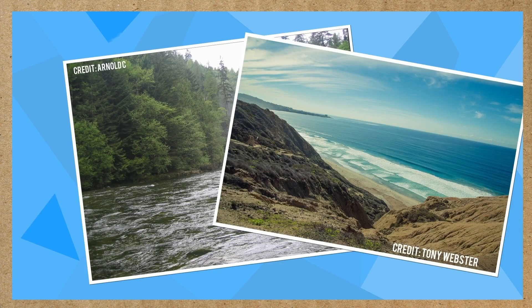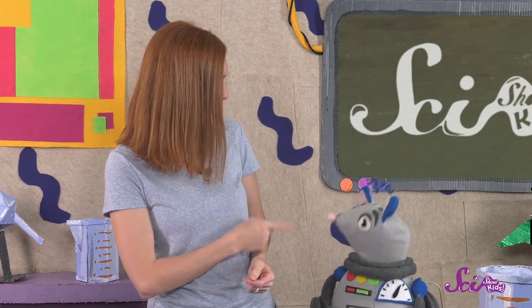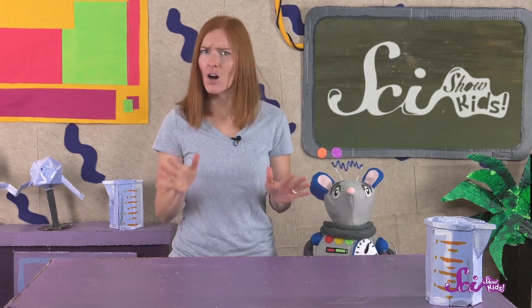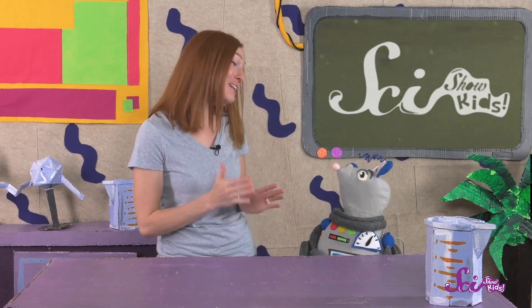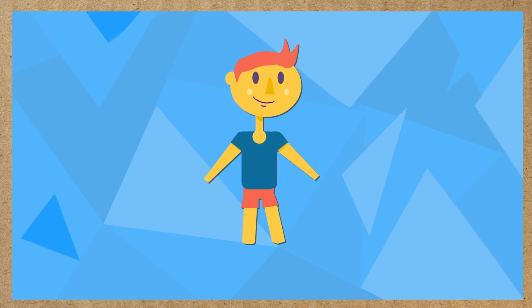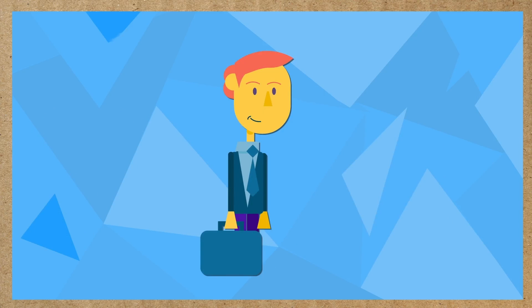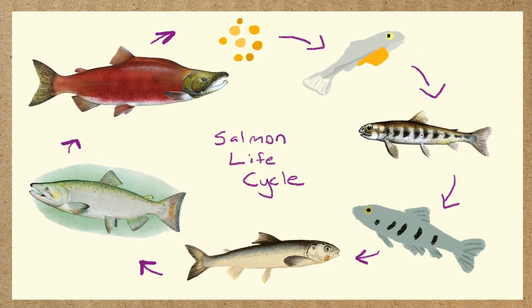What animal goes by seven different names over its life, changes color from stripy to silver to red, lives in the river and the ocean, and is an awesome parent? Is it a salmon? Yes! Salmon are amazing animals, and they have one of the coolest life cycles. Life cycles are the changes they go through as they grow up and live their lives — just like how you were a baby once, and now you're a kid, and someday you'll be a teenager, and then a grown-up. Salmon go by seven different names over their lives because there are seven different stages of their life cycle.